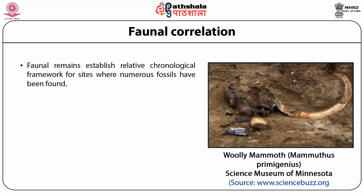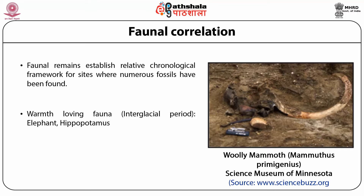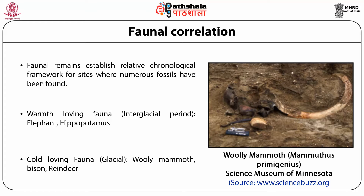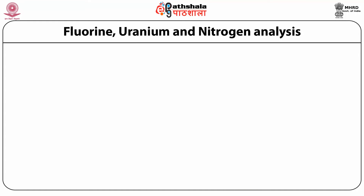Faunal correlation: analysis of faunal remains sometimes helps to establish a relative chronological framework for sites where numerous fossils have been found. New faunal forms emerge and spread with the extinction of old forms. Fossil vertebrates are also determinants of Pleistocene environment. Mollusks and insects are sometimes used as indicators of past climate. For example, faunal remains of elephant, horse, and rhinoceros belong to warmer climates, while woolly mammoth, woolly rhinoceros, reindeer, and bison are found in cold climatic conditions.